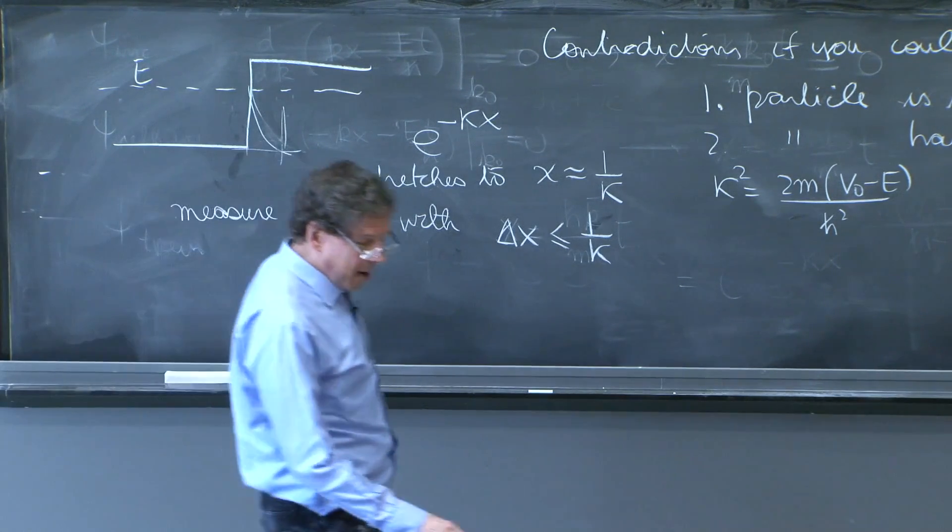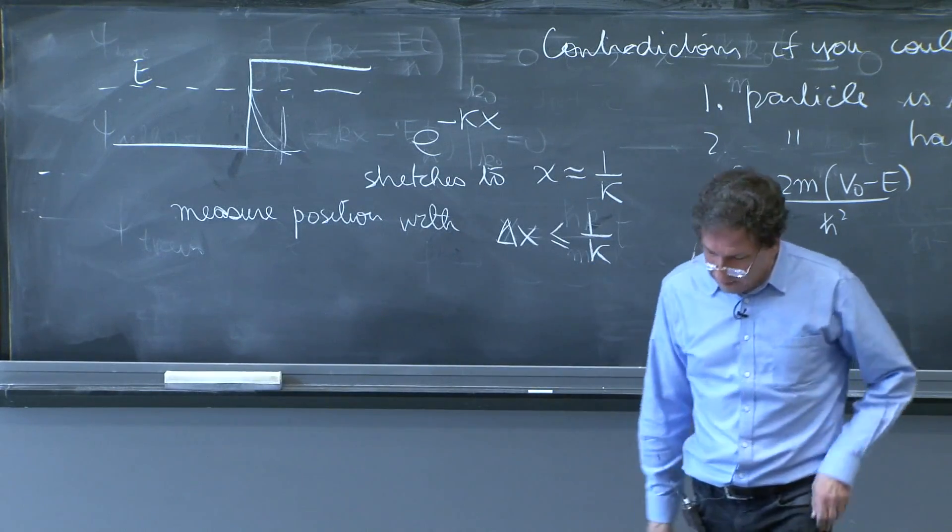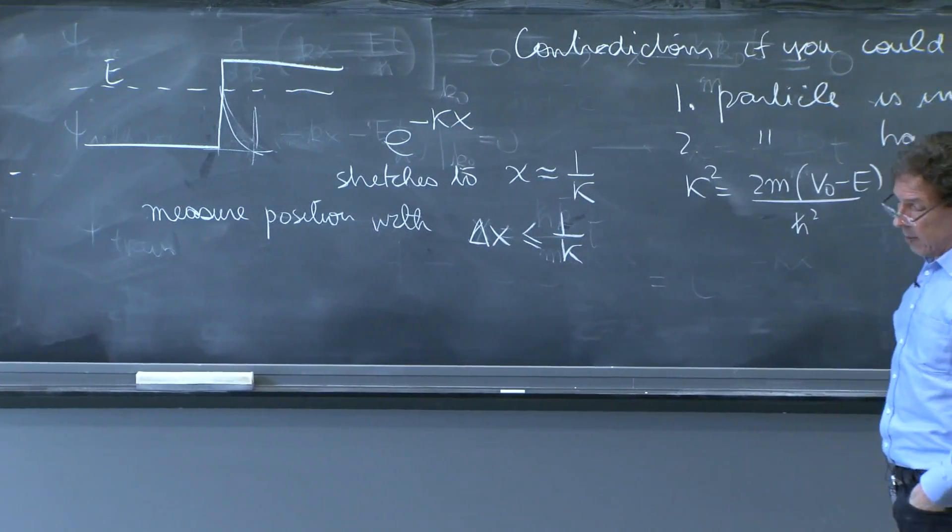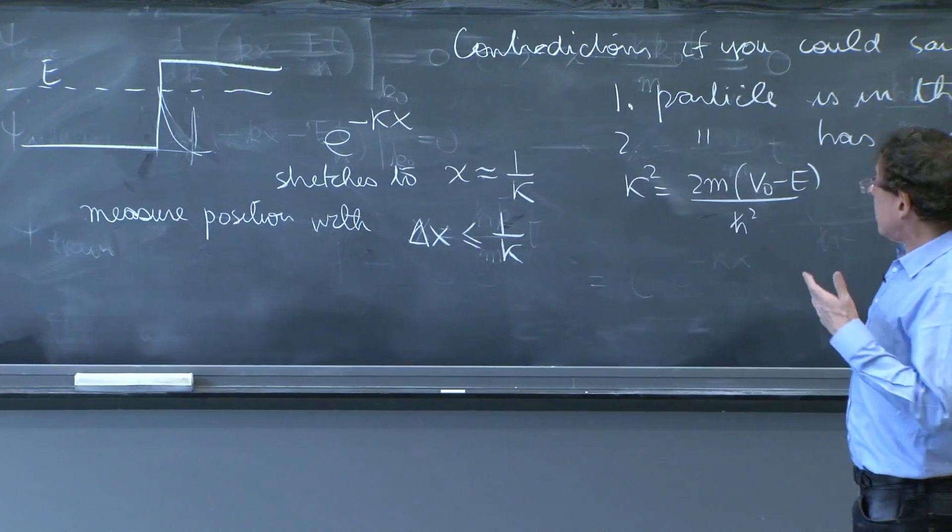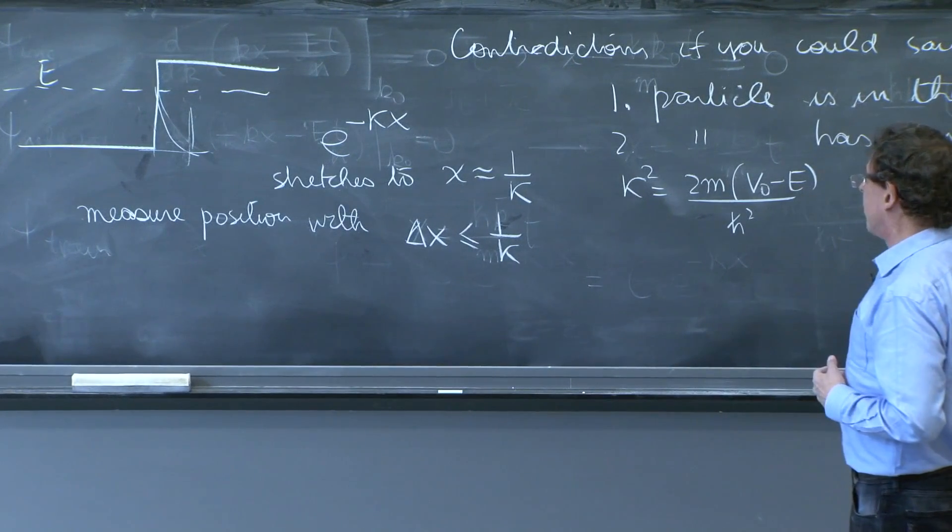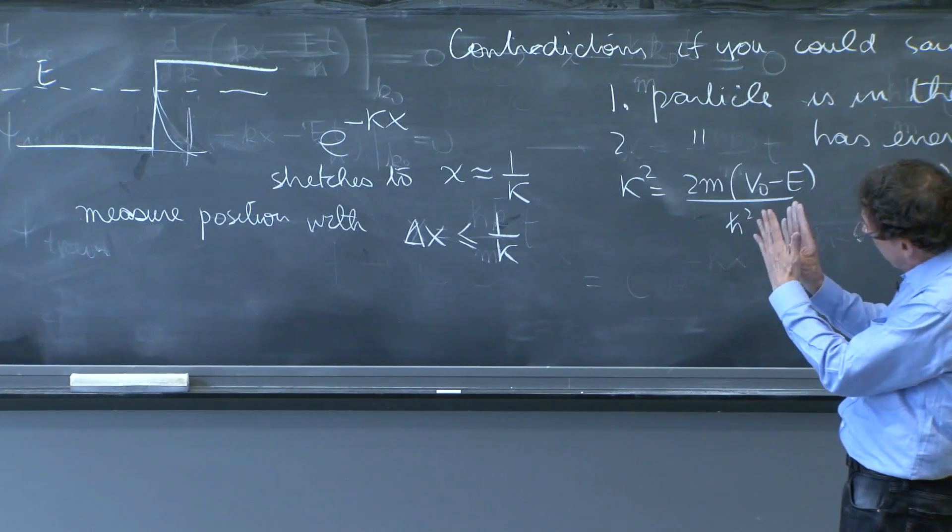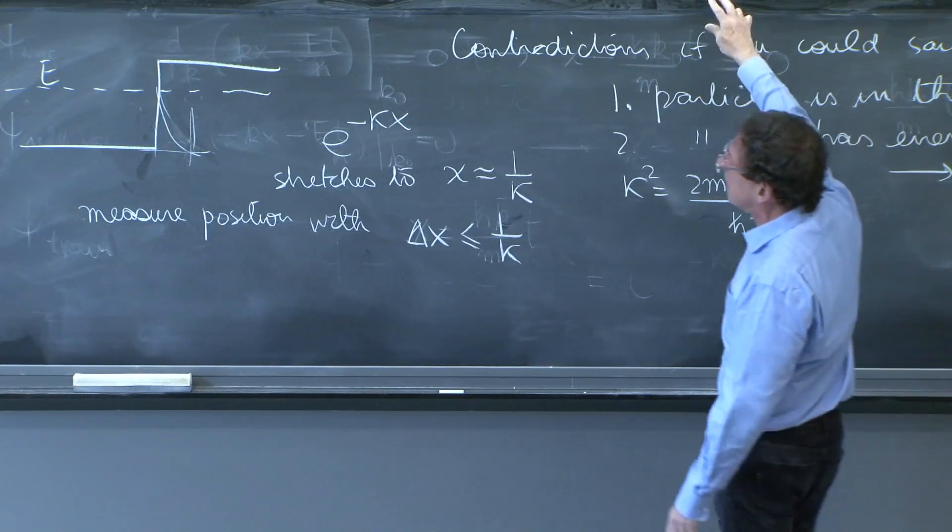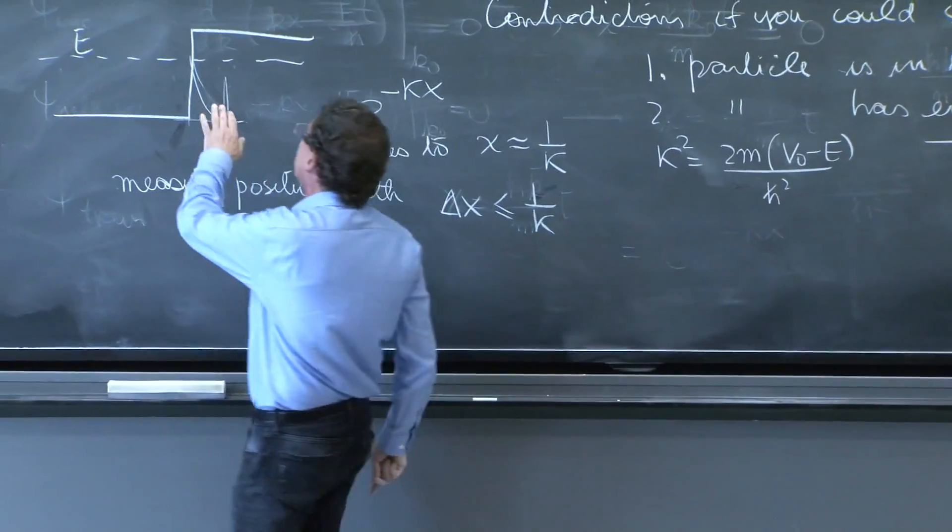But now, the problem is that if you do a position measurement and localize the wave function, there's a momentum uncertainty. The particle you're looking at, as opposed to the particle to the left, has no momentum.